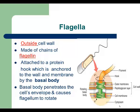The next external structure is flagella. Flagella are thin structures that extend out from the surface of the bacterial envelope, and their function is locomotion or movement. All flagella are made of proteins called flagellin. Each flagellum has three parts: the outermost part is called the filament, which is connected to the hook, and the hook is attached to the basal body. The basal body penetrates the cell wall and causes the flagellum to rotate.